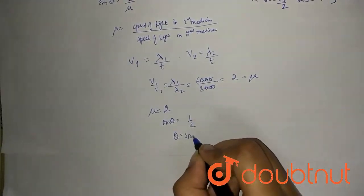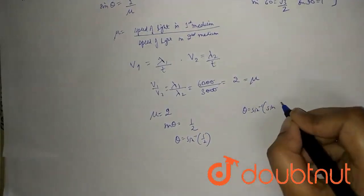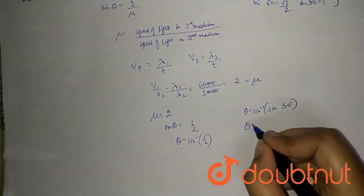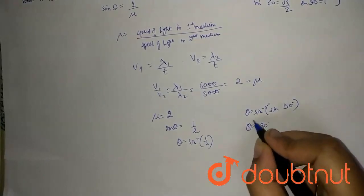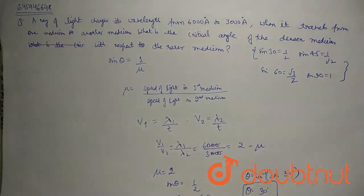So the critical angle will be sin⁻¹(1/2), which equals 30 degrees. Therefore, θ = 30 degrees. So 30 degrees is the answer.